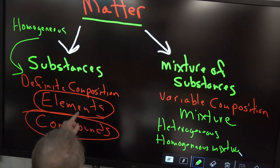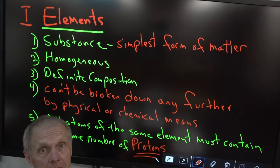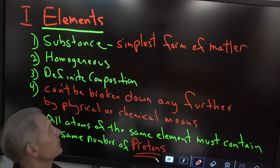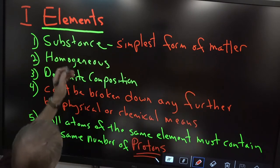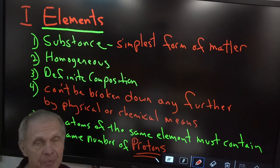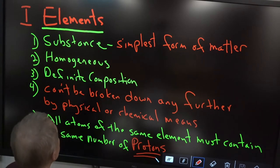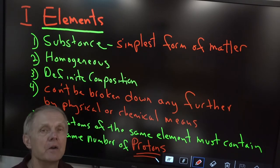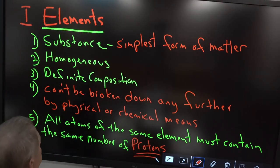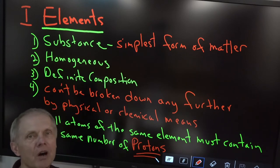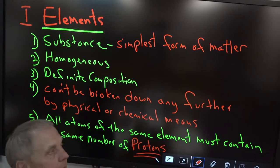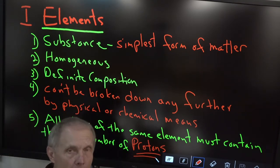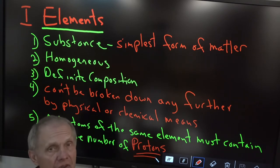Elements are substances, and substances are pure. An element is the simplest form of matter. It's homogeneous, which means it's pure. It has definite composition — if you take a sample of top, middle, and bottom, you're going to find the same thing. It can't be broken down any further, by physical or chemical means. Most importantly, all atoms of the same element must contain the same number of protons. So for sodium, every atom of sodium has to have 11 protons. Whatever element it is, all the atoms have to have the same number of protons.